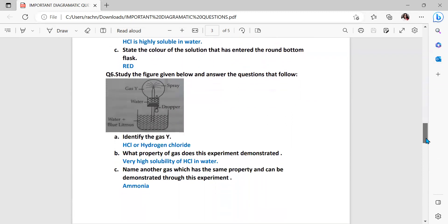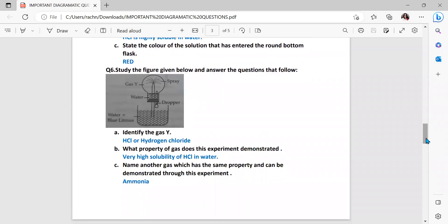Question number six. Study the figure given below and answer the questions that follow. Identify the gas. Why it is your hydrogen chloride or HCl. What property of gas does this experiment demonstrate? Again it is water plus blue litmus solution. This is the fountain experiment setup. Why will be hydrogen chloride or HCl. What property of the gas does this experiment demonstrate? Very high solubility of HCl in water. Name another gas which has the same property and can be demonstrated through this experiment - it is ammonia.